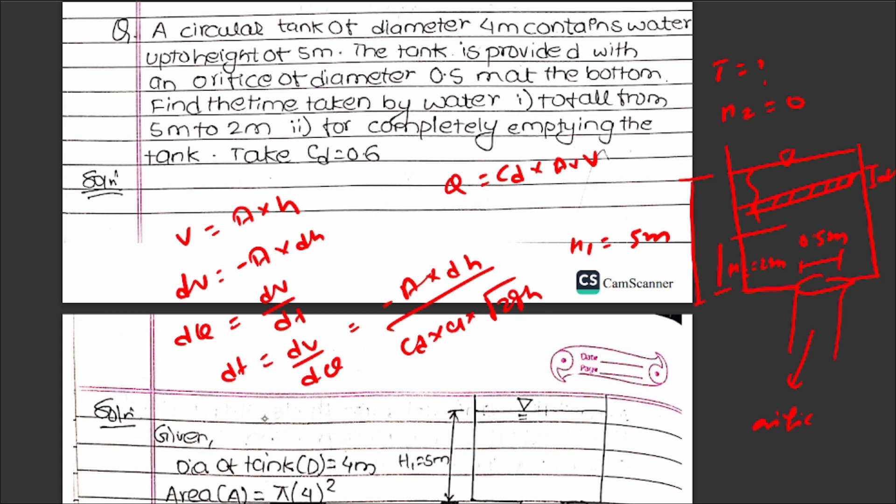Integrating from s1 to s2: t = -A dh / (cd × a × √(2g)).